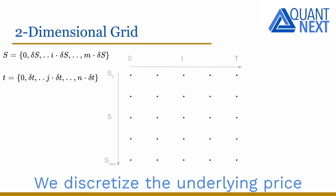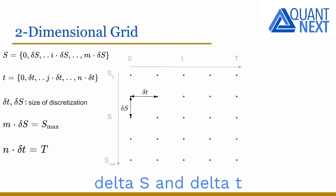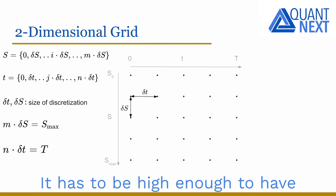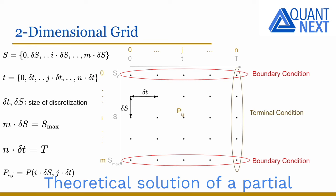We discretize the underlying price with m price intervals delta s, and we discretize time with n time intervals delta t. S_max is the maximum value of the underlying price — it has to be high enough to have a very low probability of being reached — while n times delta t is equal to the time to maturity, capital T.